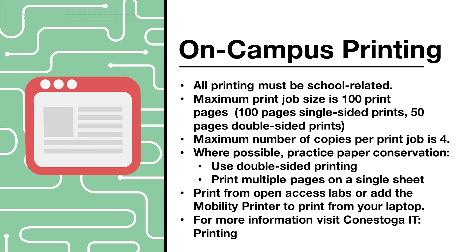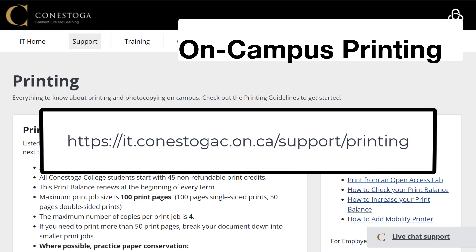Printing. You can print from an open access lab or from your laptop when on campus. All printing must be school-related. The maximum print job size is 100 print pages — either 100 pages single-sided or 50 pages double-sided. The maximum number of copies per print job is 4. Where possible, practice paper conservation by using double-sided printing or printing multiple pages on a single sheet. You can print from open access labs or access the mobility printer to print from your laptop. If you need more information on printing, visit Conestoga IT printing.